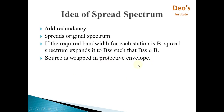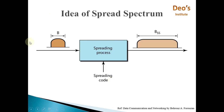Like we wrap a delicate expensive gift in a special box to prevent it from being damaged. This diagram explains what spreading of spectrum means. This is your original message with bandwidth B. This original message passes through the spreading process. The spreading process has one more input called the spreading code. This spreading code is independent of the data — the data and the code don't have any relation.